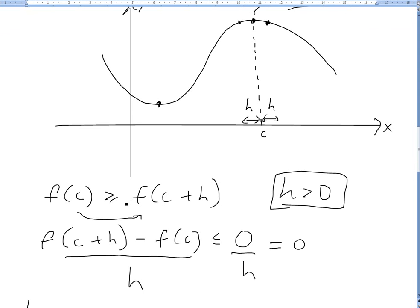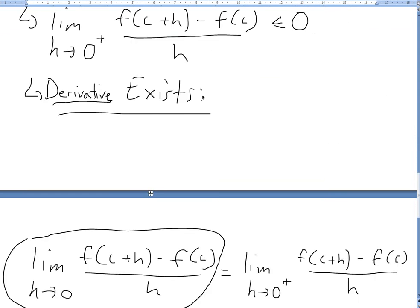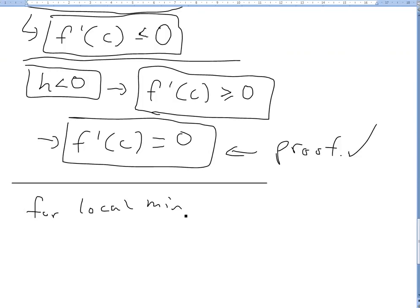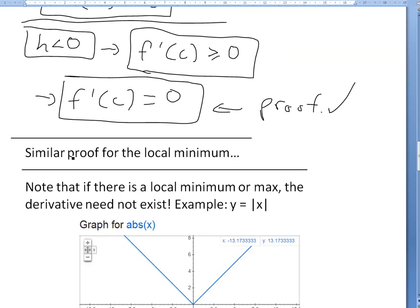For the local minimum, it's basically the exact same procedure. Except now we'll have the inequality sign reversed — instead of greater than or equal to, it's less than or equal to — and we just flip the signs through the same steps. The conclusion is identical.